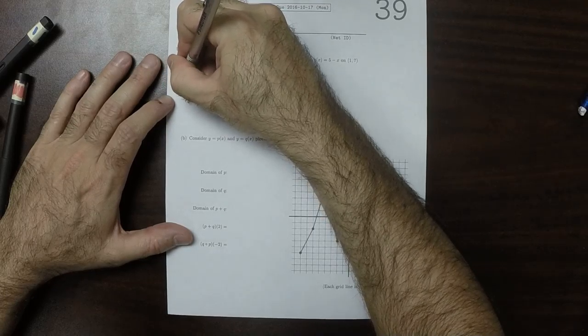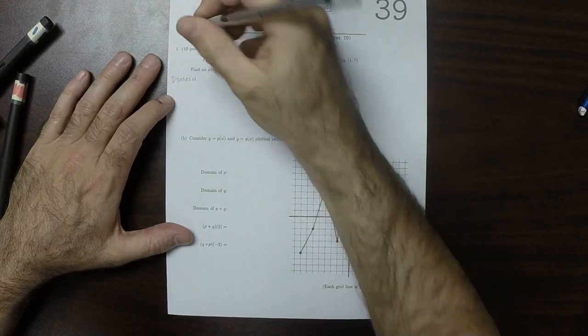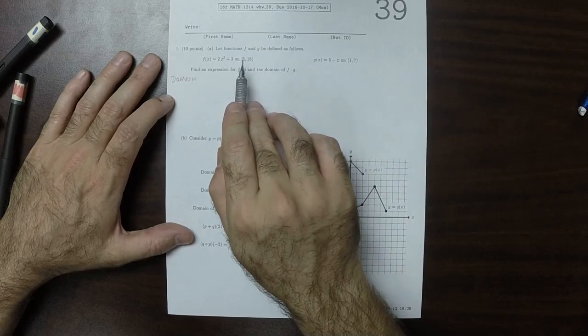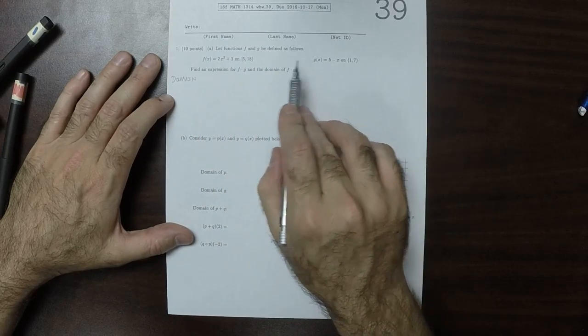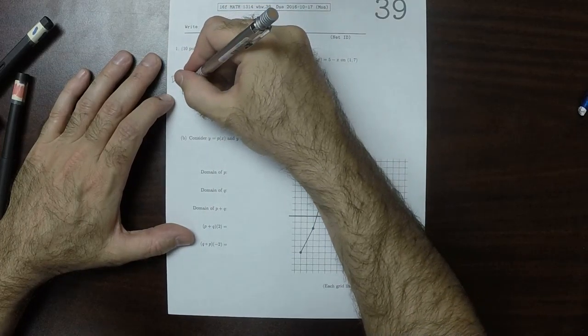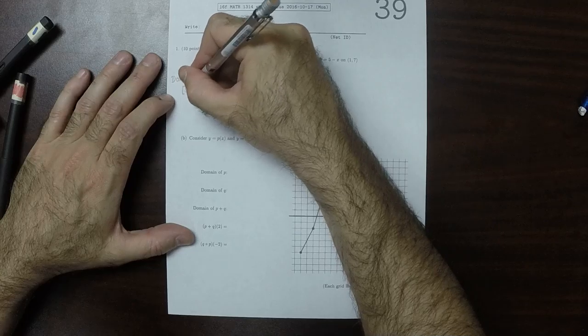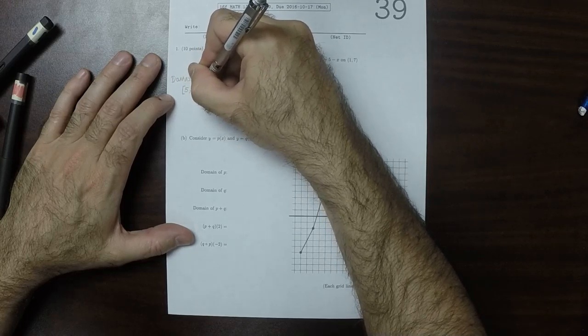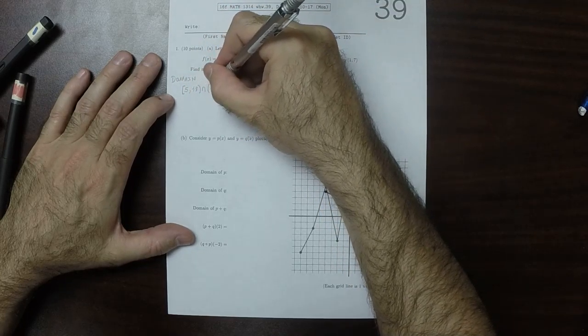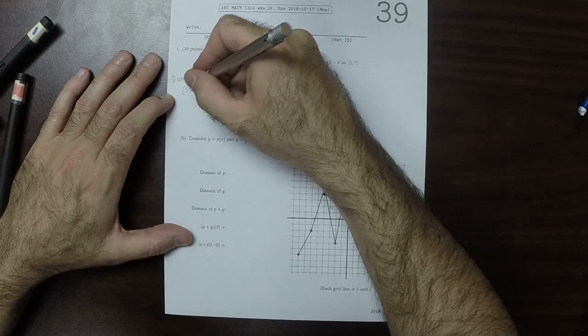Okay, so for the domain of the product function, the domain is going to be the intersection because we have to be able to evaluate f and also g, which means we have to be able to evaluate both. So the domain is 5 to 18 intersect 1 to 7. And that is 5 to 7.